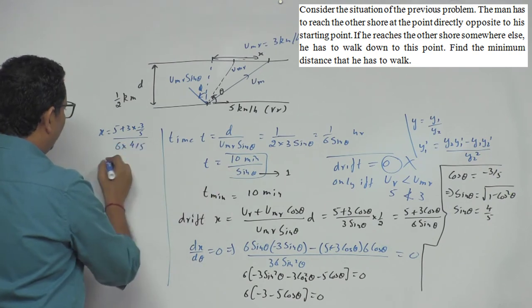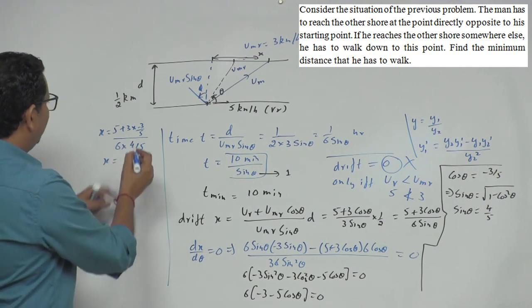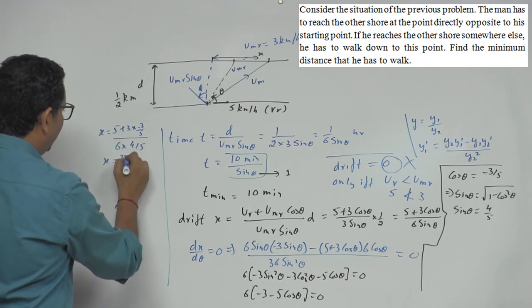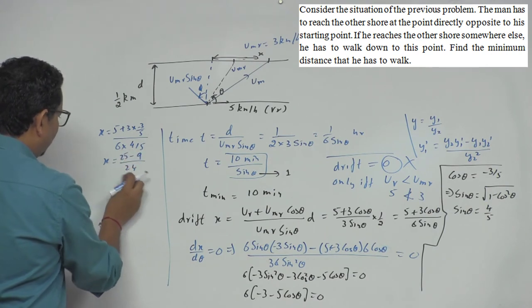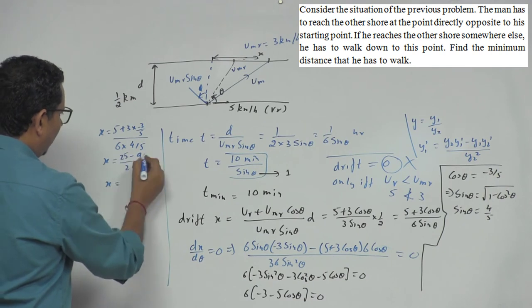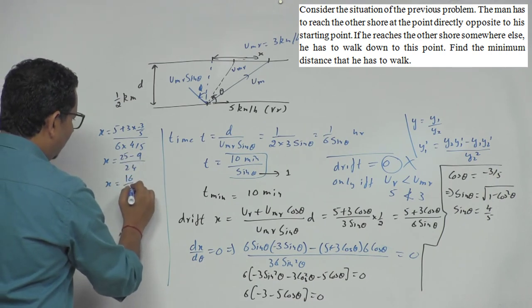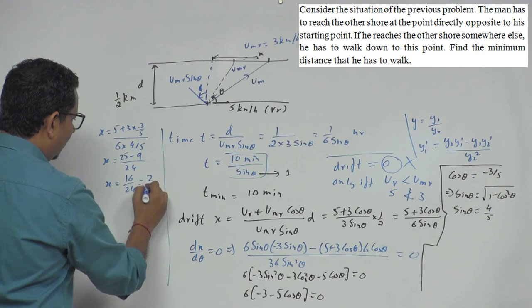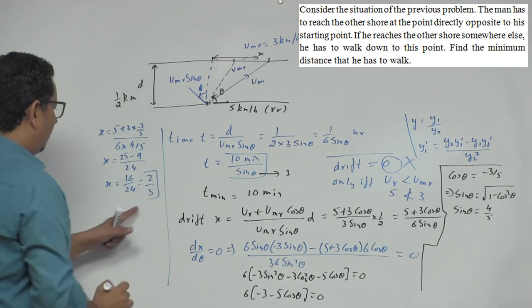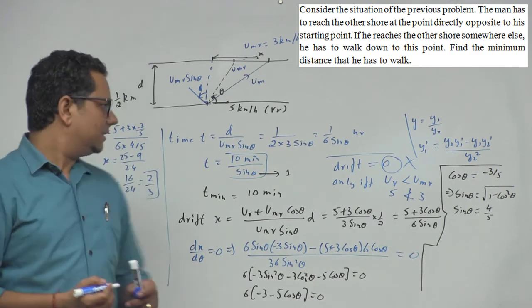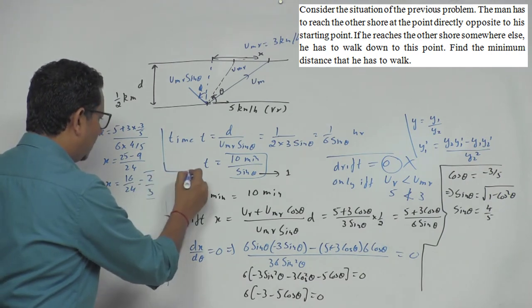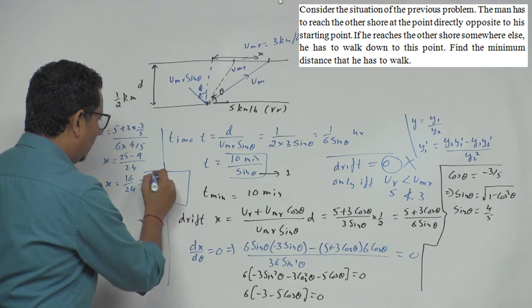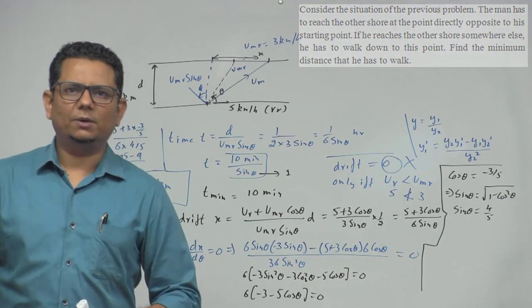This will equal 25 minus 9 divided by 24, so that will equal 16 divided by 24, which simplifies to 2/3 kilometer. So that will be our final answer: 2/3 kilometer. This is our final answer for this particular problem.